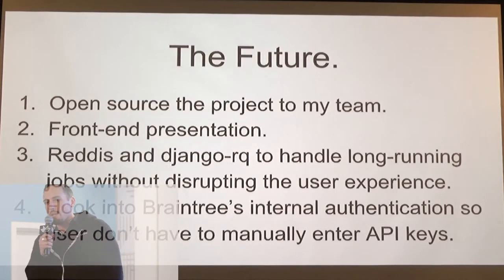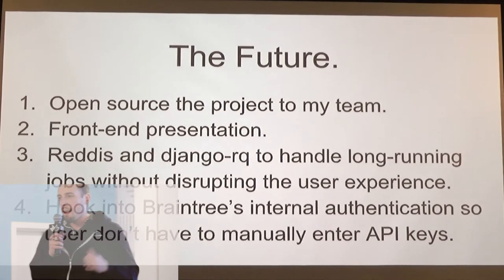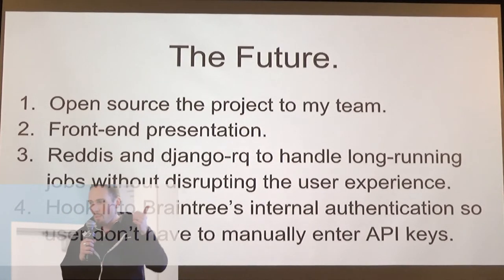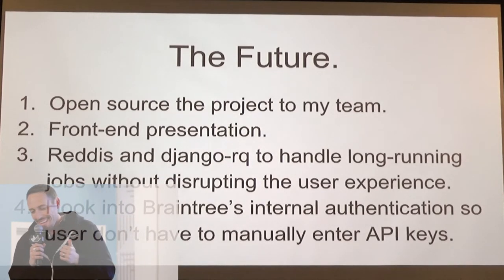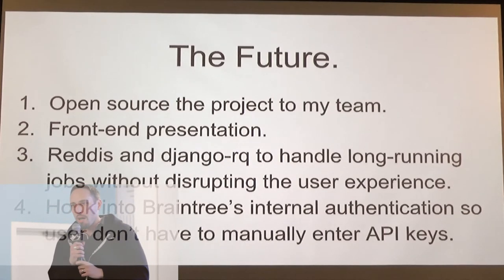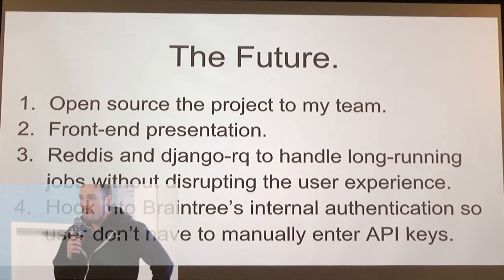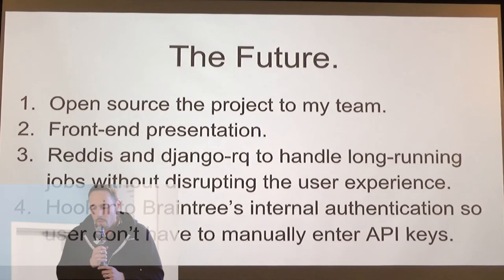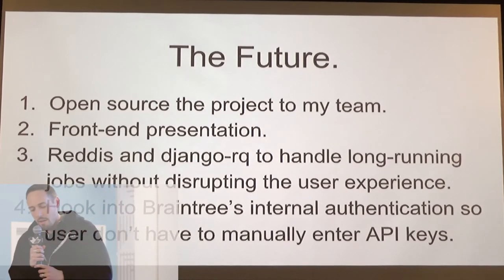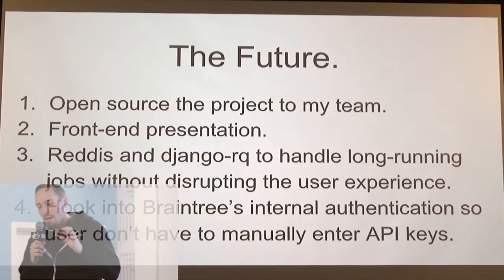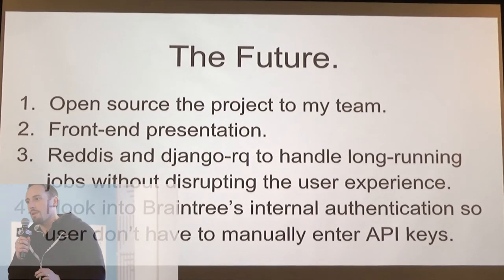So this is a tool that's used internally on our team. I want to open source it because I have some skill gaps that my teammates can definitely contribute to — front-end presentation being one. But I want to add Redis and Django RQ to handle long-running jobs so that you don't have to sit and wait for the redirect once you kick off the job. And I'd love to get this on the internal Braintree network so that we can authenticate without having to paste in your API keys.